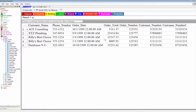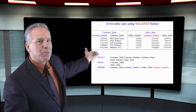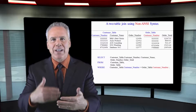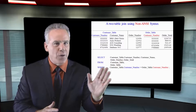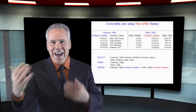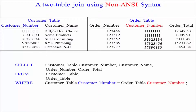Here's how we're going to write this. We say SELECT customer_table.customer_number — I've specified which table I want customer number to come from in the select list, and that's called fully qualifying it. I don't have to do it on the other columns because they're not in both tables. Only customer number is in both tables. So I select customer_table.customer_number, customer name from the customer table, then order number and order total from the order table. Those four columns will be on my report.